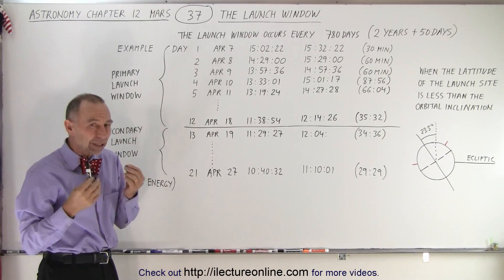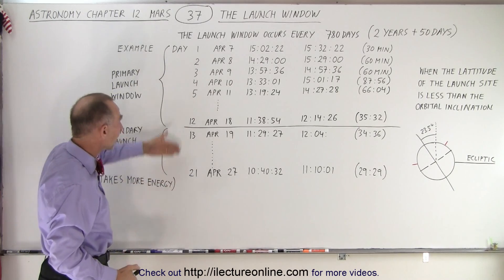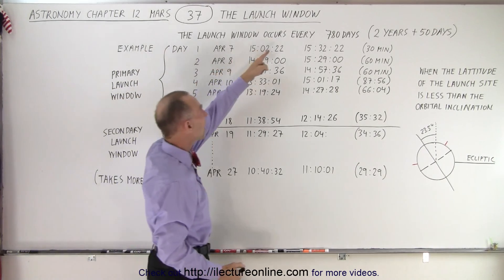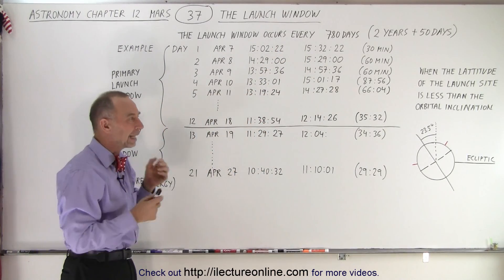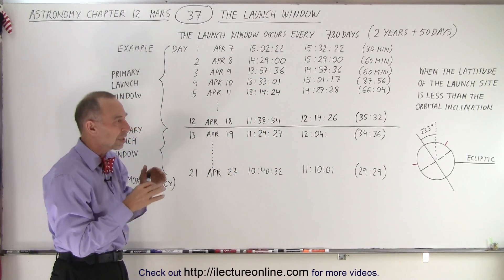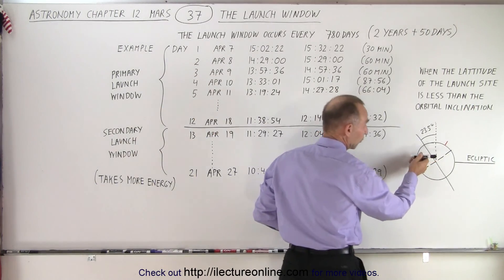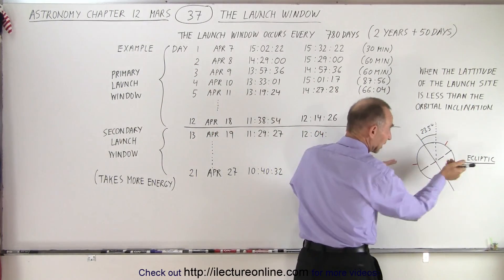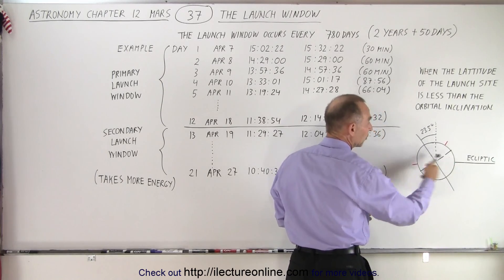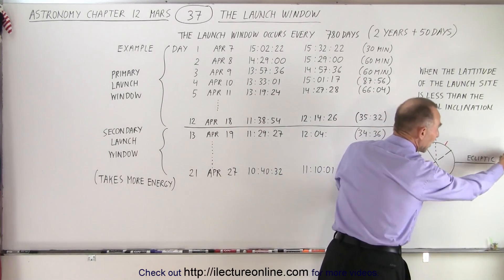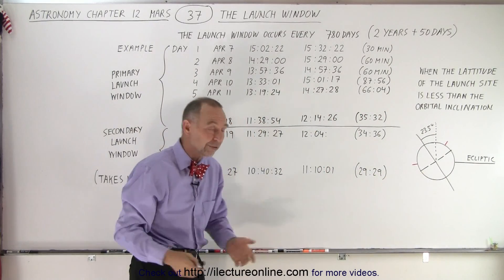Also notice that on each day — typically during that 21-day period — we'll have two times during the day in which the spacecraft can be launched. That is because of the orientation of the ecliptic and where the spacecraft wants to go. For example, if Mars is close to the ecliptic, you want to send the spacecraft into orbit when you're pointing in the same direction as the ecliptic, which is the same direction where you're going to find Mars.